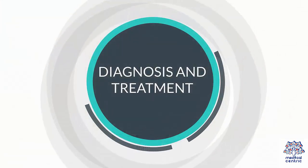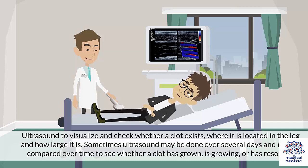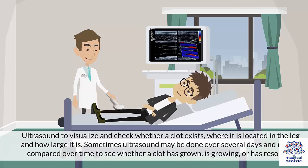Diagnosis and Treatment. The diagnosis of deep vein thrombosis is based on symptoms and physical exams to check for areas of swelling, tenderness, and discoloration of the skin. Your doctor may suggest an ultrasound to visualize and check whether a clot exists, where it is located in the leg, and how large it is. Sometimes ultrasound may be done over several days, with results compared over time to see whether a clot has grown, is growing, or has resolved.